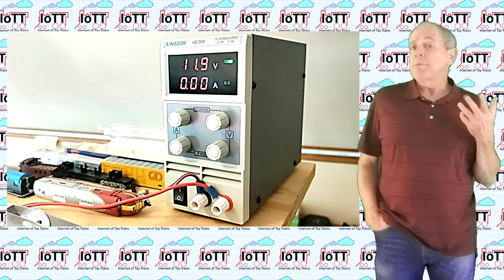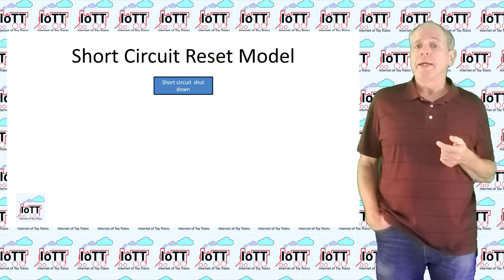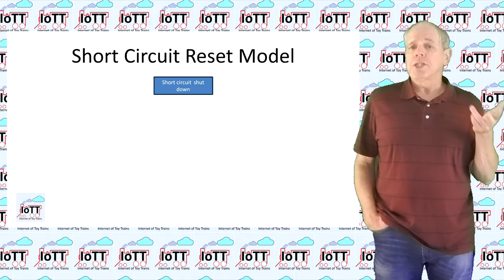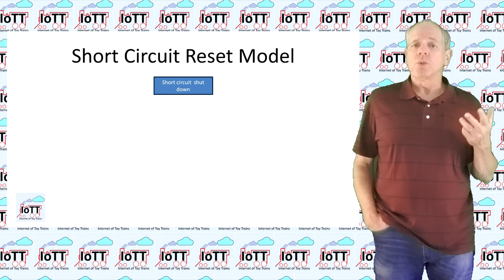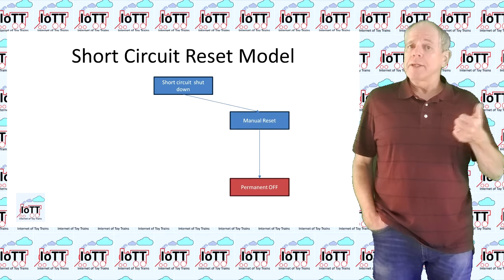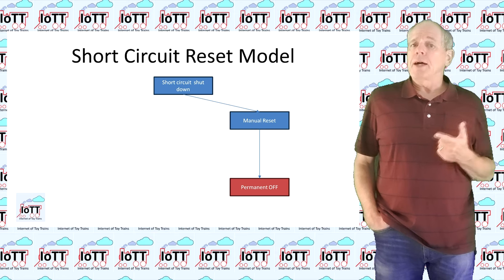If the short circuit is applied for longer than the blow delay time, and the booster is shut down, I have implemented three options to restore the power: Manual reset, limited auto reset, and full auto reset.